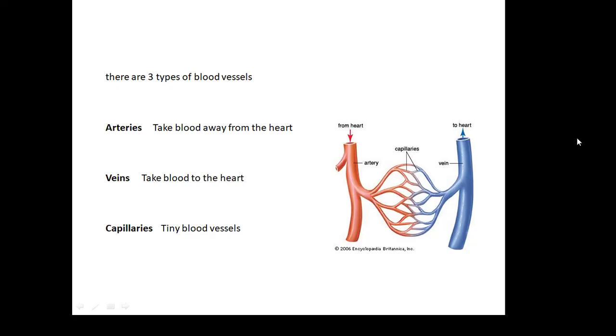Veins take blood to the heart. They carry blood from the body and that goes to the heart. So this blood contains less oxygen, so it's not bright red and it's at a lower pressure as well.